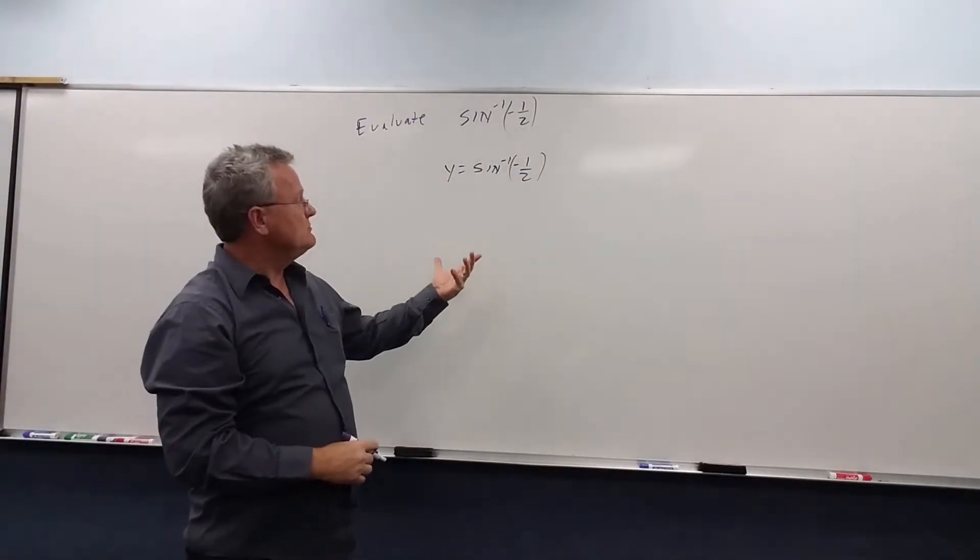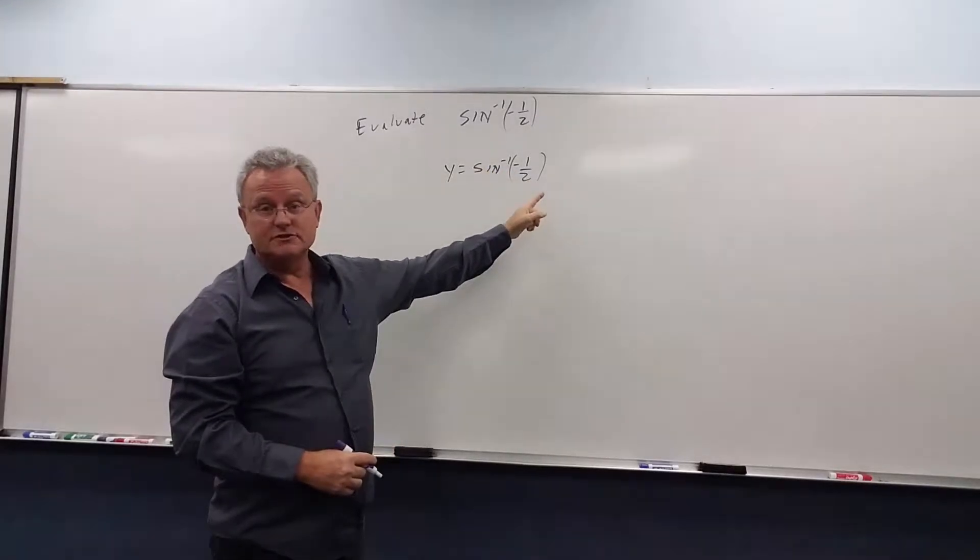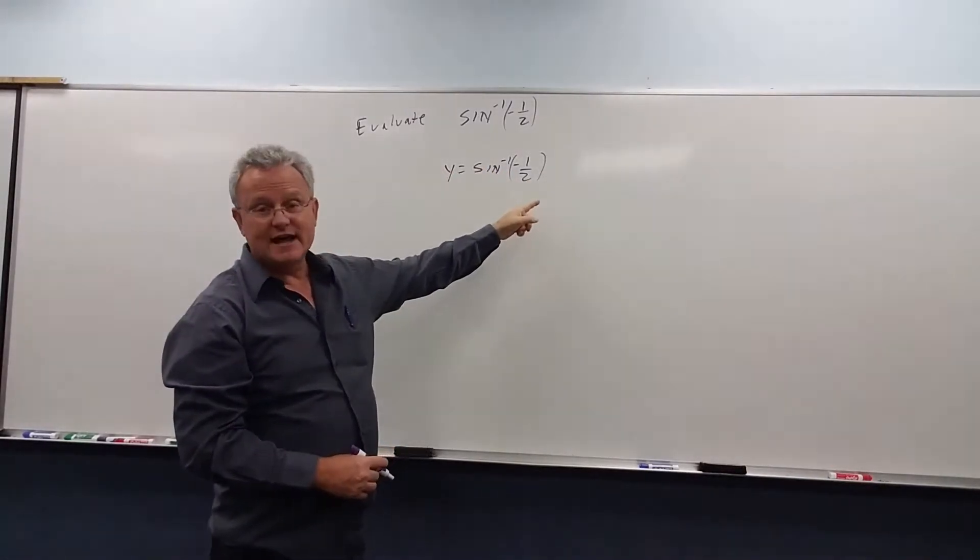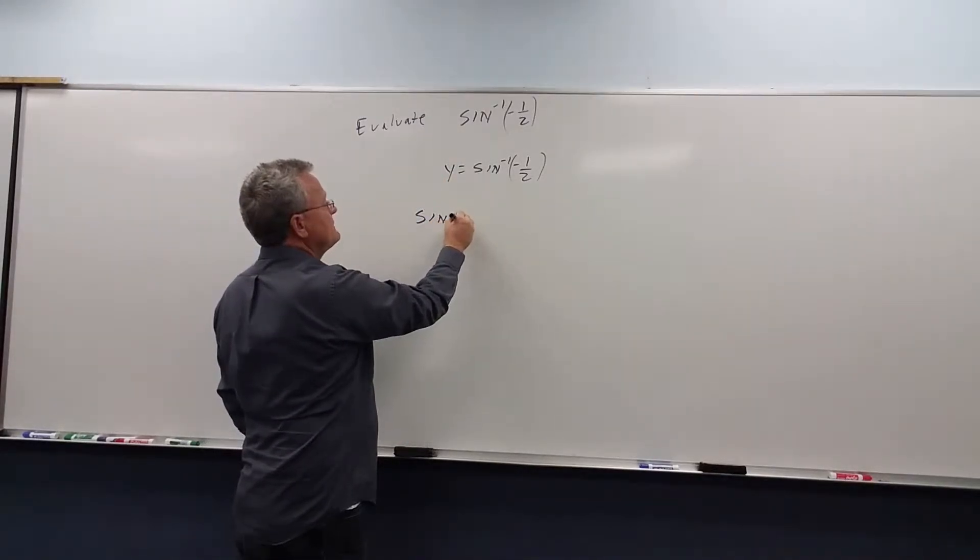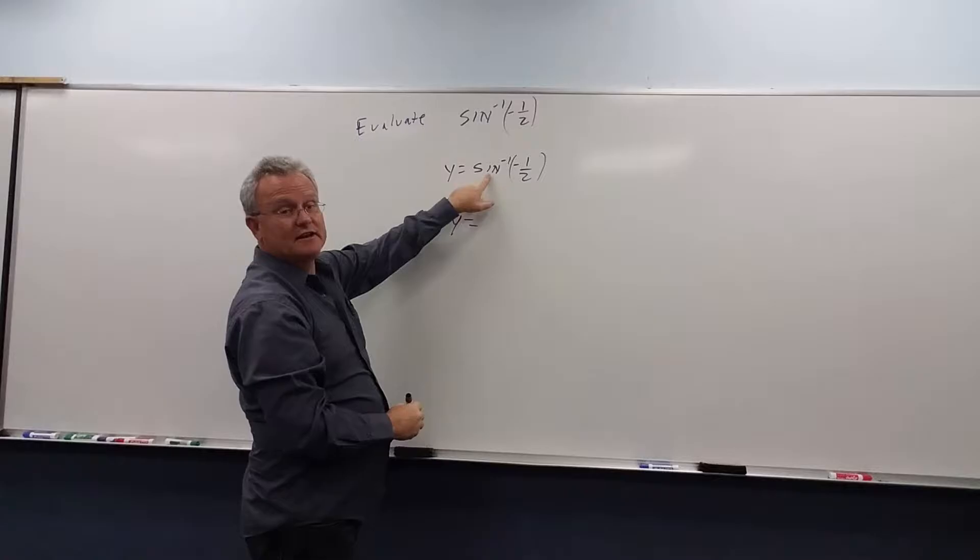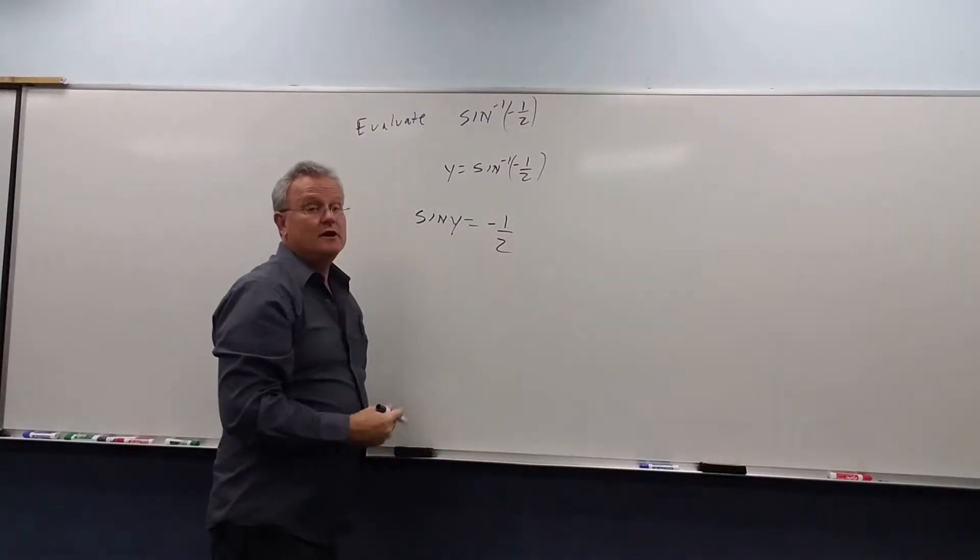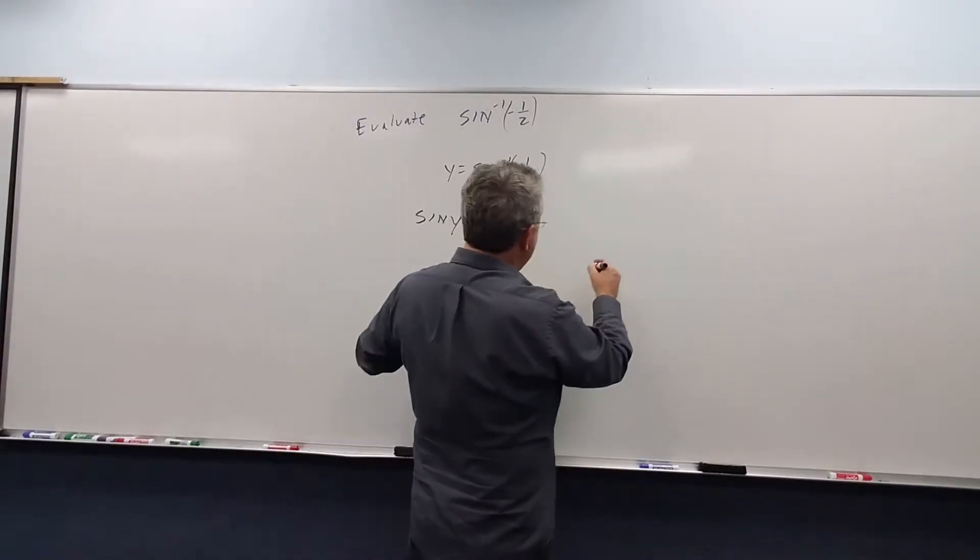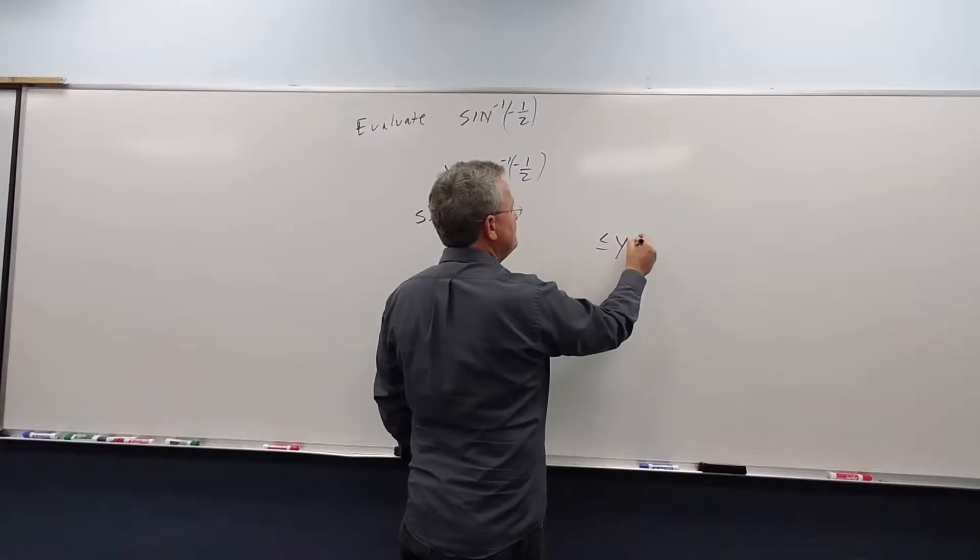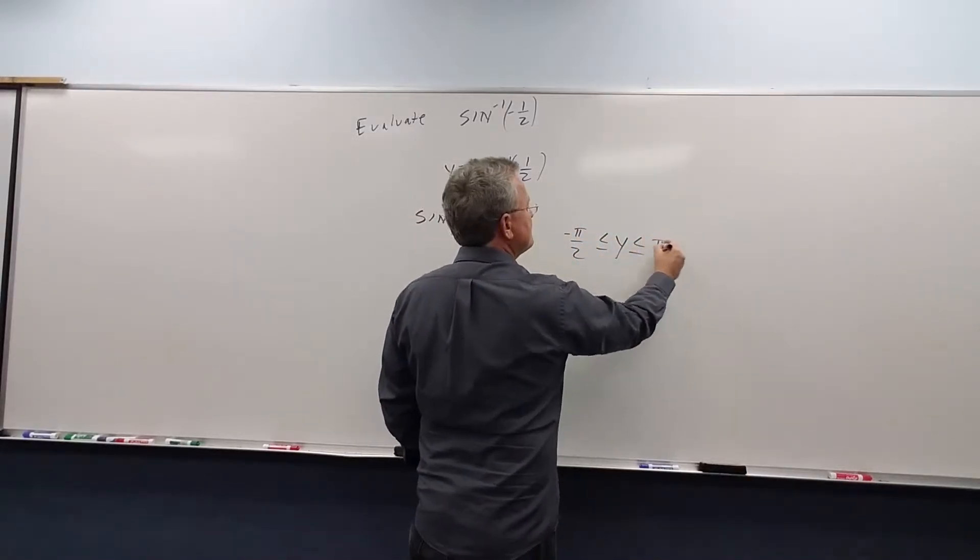The reason we do that is it takes us back to the definition of y equals inverse sine x. We take the sine of both sides and we get sine of y equals, well, the sine of inverse sine negative 1/2 is negative 1/2. But we need to remember that for inverse sine, y has to be between negative π/2 and π/2.